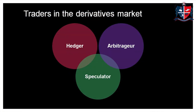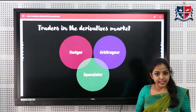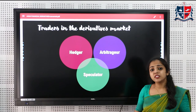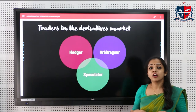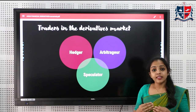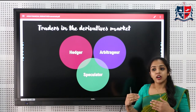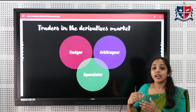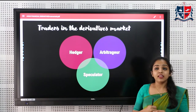The traders in the derivative market are hedgers, speculators, and arbitrators. Hedgers are the major participants; they use derivative instruments to hedge risk. For example, exporters or importers exposed to foreign exchange fluctuations use currencies as an underlying asset to hedge the risk arising from those fluctuations.